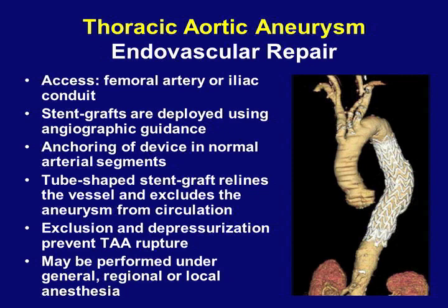Endovascular repair requires anchoring of the device in relatively normal areas of the aorta above and below the aneurysm. The principle is that of a tube-shaped stent graft that relines the vessel and diverts blood through the stent graft and away from the aneurysm. The aneurysm is thus excluded and depressurized, and usually shrinks in size or clots off.